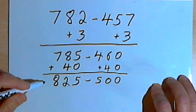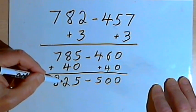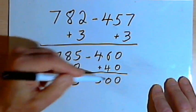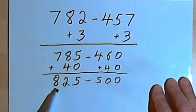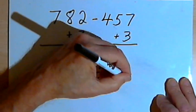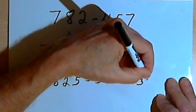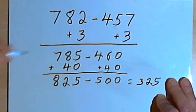Now when I do my subtraction, what I see is that 825 minus 500 just means that all I have to do is take the 5 from the 8, subtract the hundreds column. And that's going to give me 325.